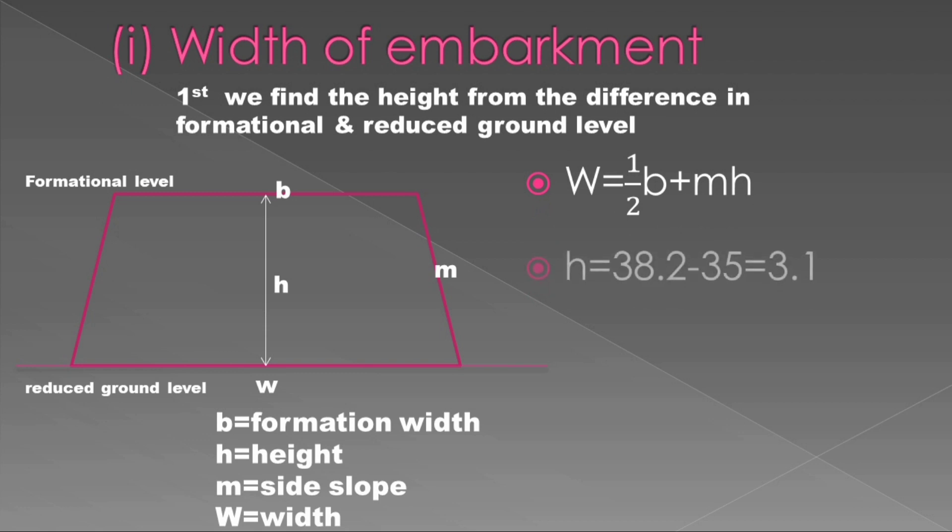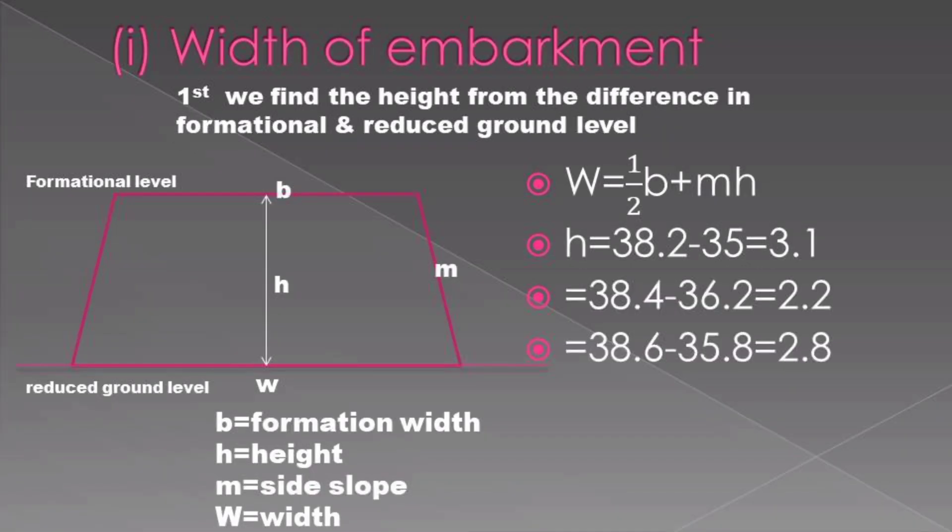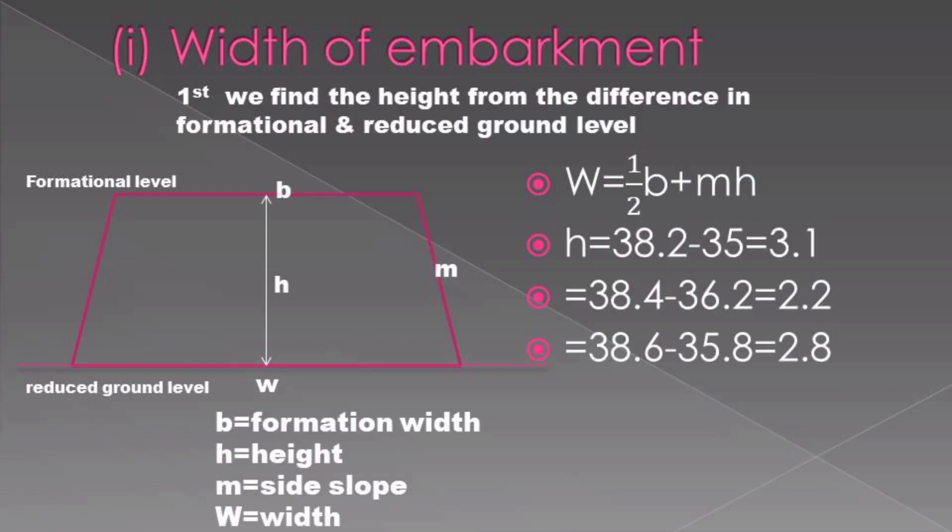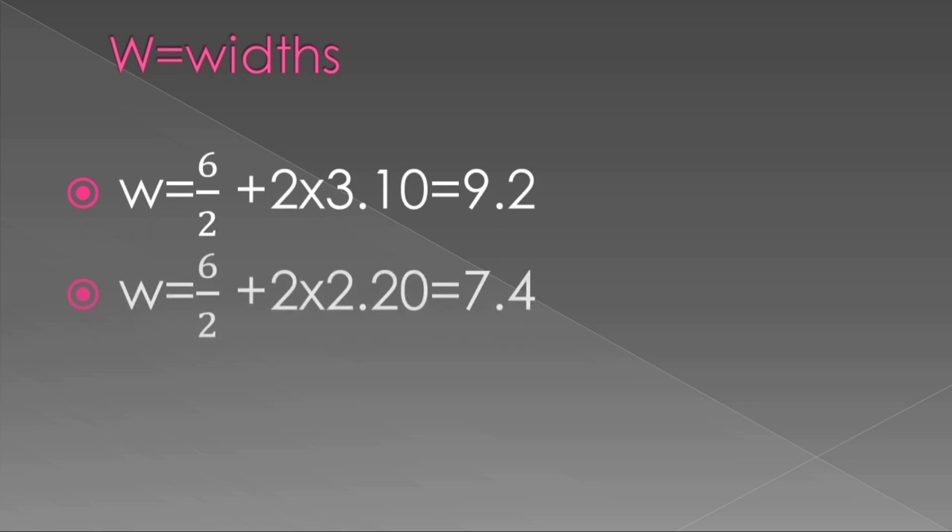Then our height will first be calculated from the difference in the chainages interval. From our earlier formula, we can calculate the side width of the embankments. I have already done the heights by subtracting the reduced level from the formational level. The formational level is found on top; the reduced ground level is found at the ground level. After having that, I apply my formula w = (b + mh)/2, giving me three widths of the embankment.